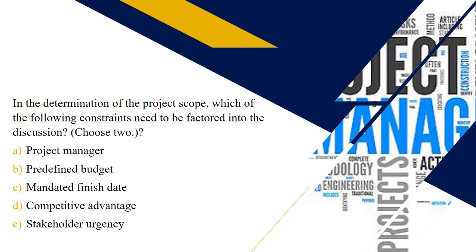In the determination of the project scope, which of the following constraints needs to be factored into the discussion? Select two from this list. Hopefully you selected B and C. Two of the triple constraints are represented: a predefined budget and a fixed or mandated finish date. These constraints will impact the options available in terms of scope and should be considered when creating the scope statement.